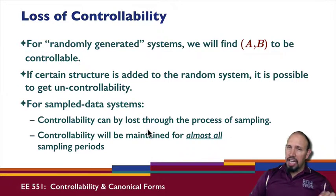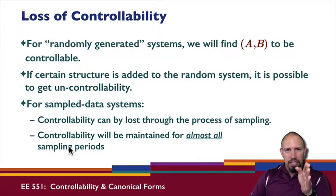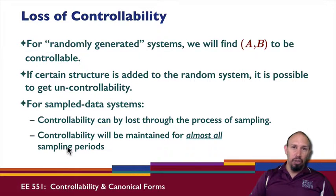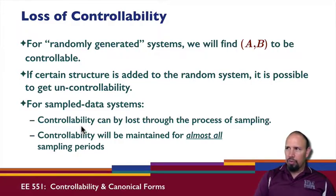However, the nice thing is that even though controllability can be lost, it will be maintained for almost all sampling periods. That means all sampling periods except for possibly a finite number of specific values. For example, if one value of sampling period gives you an uncontrollable system, if you just tweak that slightly to the right or to the left, you will be able to get something that is controllable if the original system was controllable.